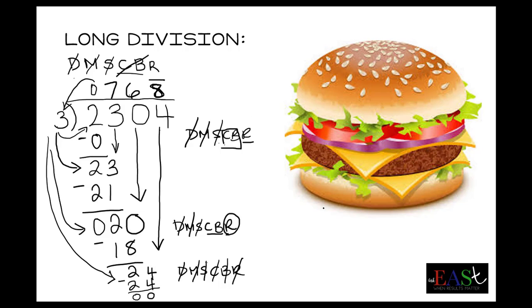And if we want to check, we use our times tables. The quotient multiplies with the divisor. That's how you check. So let's do it. 768 times 3. 8 times 3 is 24. Put the 4, carry the 2.